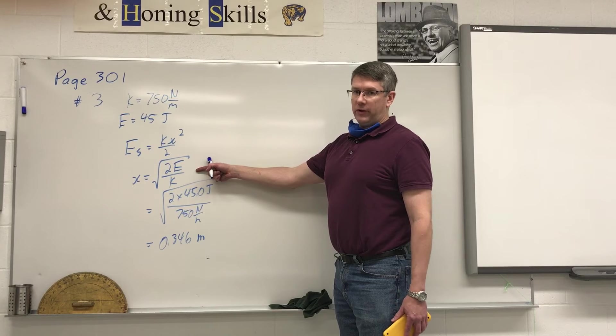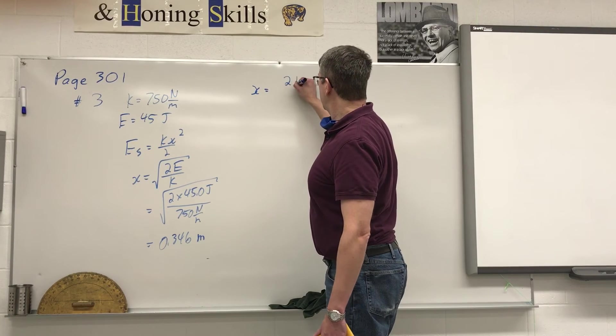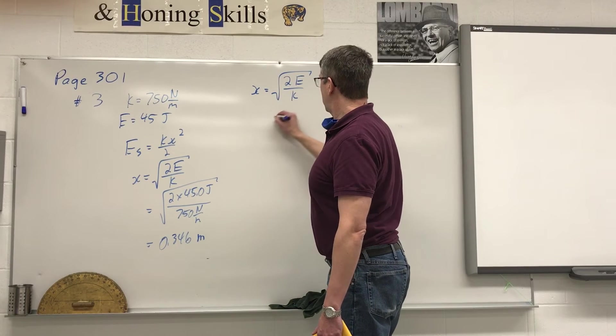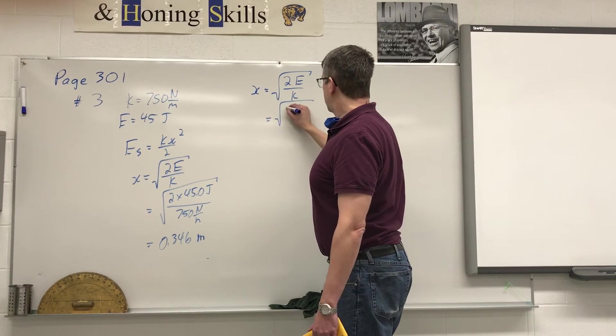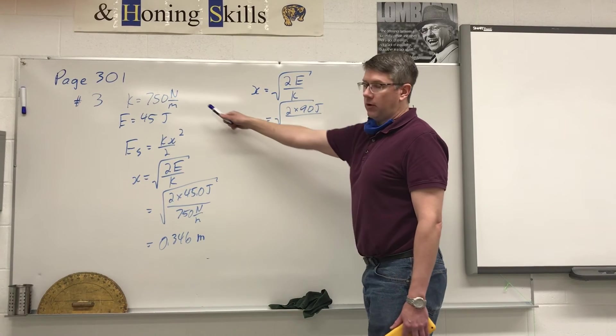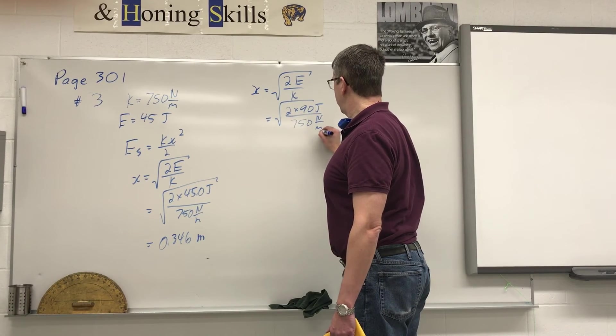Going back to this equation to figure out how far we have to stretch it. X is equal to 2 times our energy divided by our k value, and take the square root. So we need the square root of 2 times 90 joules, double our original 45 joules, divided by 750 newtons per meter.